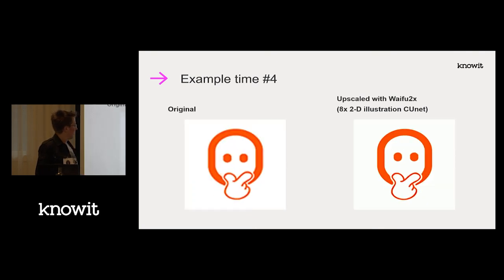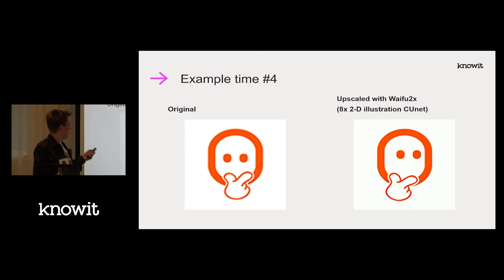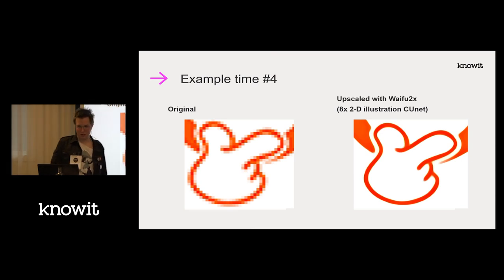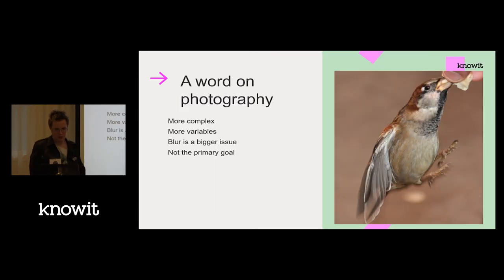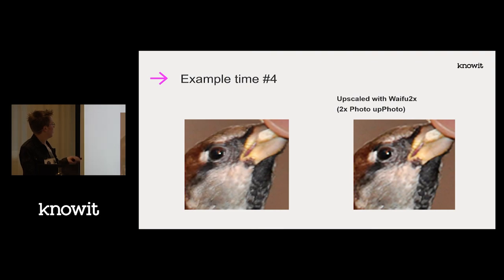A practical example: we had some GIFs in one of our applications and this is basically just an internal test of what it would look like if we ran it through waifu2x — significantly better. It did an impressive job on the detail. For photography it's not as strong but it does a decent job — here's the original image and here's what it looks like downscaled and re-upscaled; it's pretty close, not perfectly there, but decent.